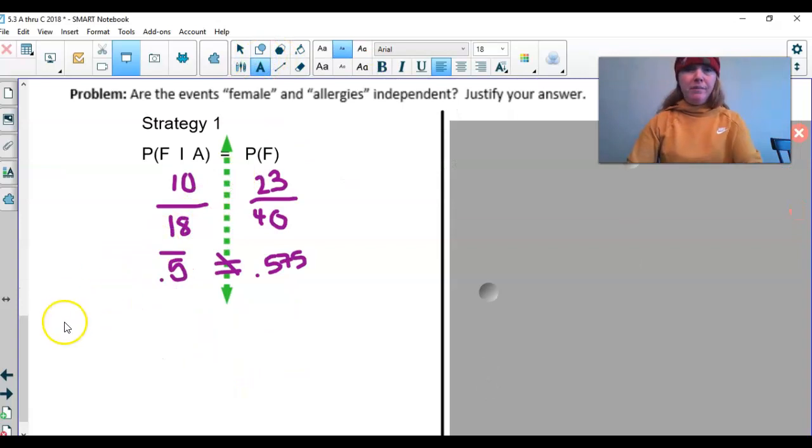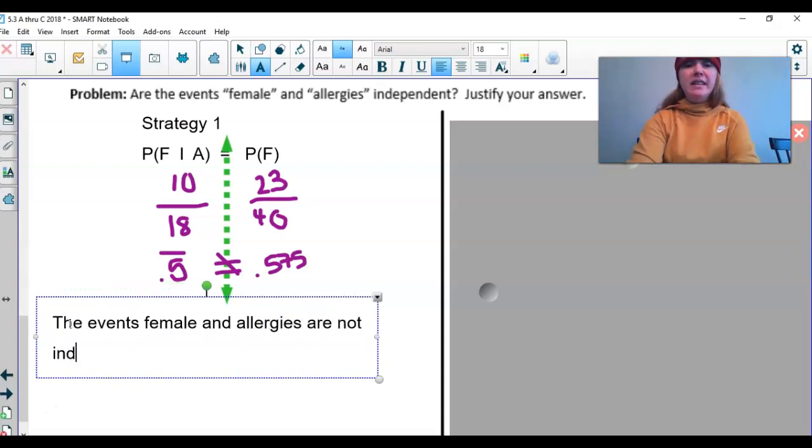These two numbers are not equal. So what do I say? The events female and allergies are not independent. And that's all we have to do.